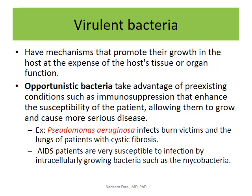Pseudomonas aeruginosa is a problem because skin is exposed after burns, and normal flora will take over and cause infection. Lungs of cystic fibrosis patients are also susceptible. AIDS patients are very susceptible because their CD4 T cells are deficient. Any bacteria that wants to grow intracellularly — antibodies can't reach it, and you need T cells. AIDS patients with deficient T-cell-mediated immunity also develop secondary infections like Mycobacterium tuberculosis.